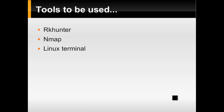RKHunter checks: MD5 hash comparison, default files commonly used by rootkits, incorrect file placements, search for suspect strings in LKM and KLD modules, hidden files, deleted files, listing applications that could be used with libpcap, and searching for old versions of software packages.